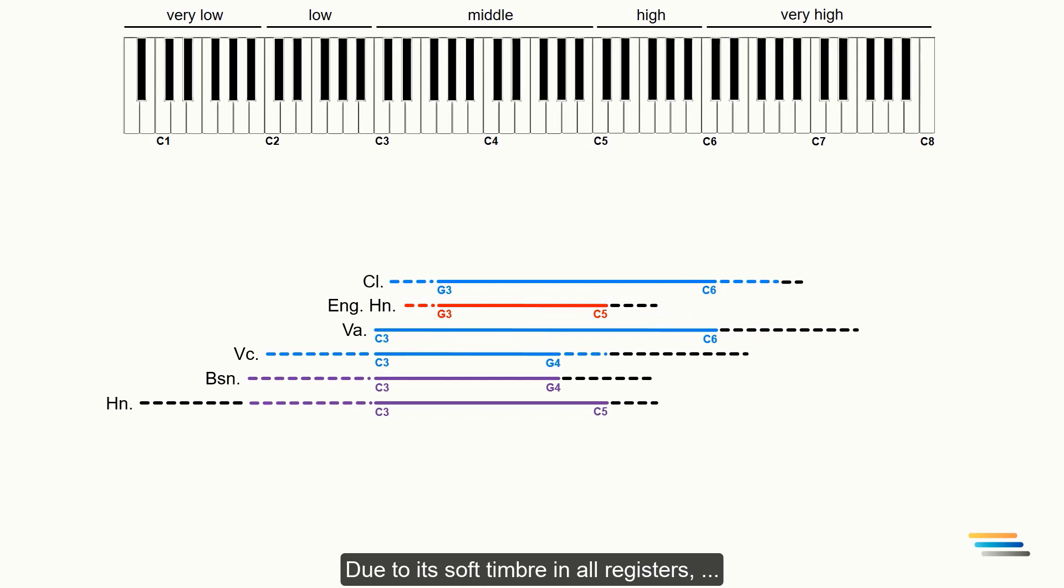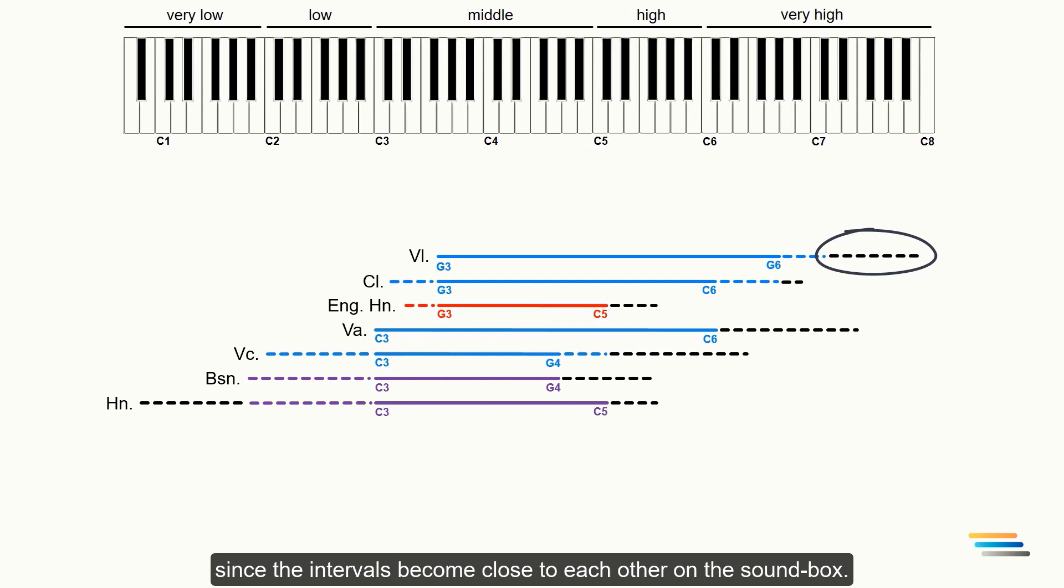The clarinet in Bb. Due to the soft timbre in all registers, I am going to expand its range from G3 to C6. The blue dashed lines can also be used. The violin has a huge effective range from G3 to G6 while it can be up to C7. The very high register is not useful and risky since the intervals become close to each other on the sound box.